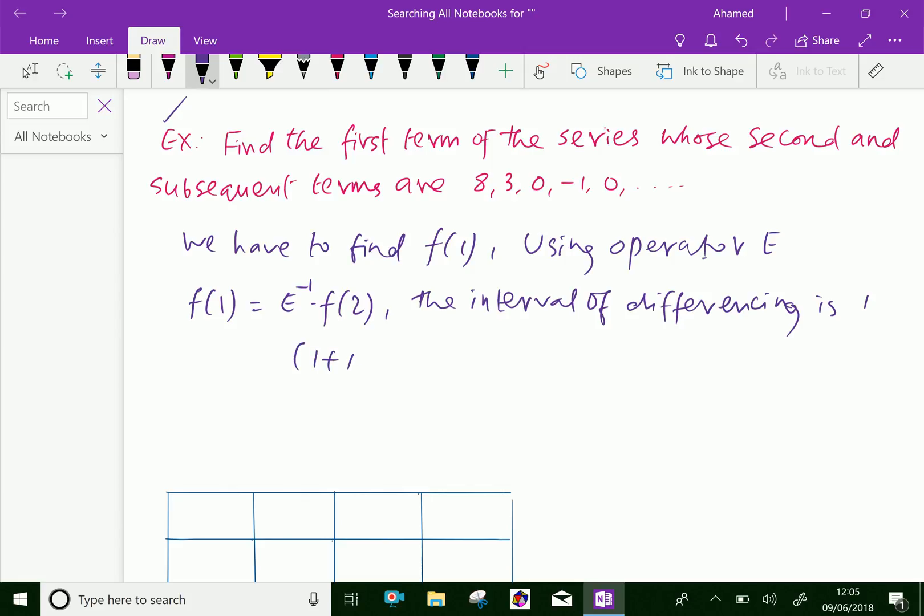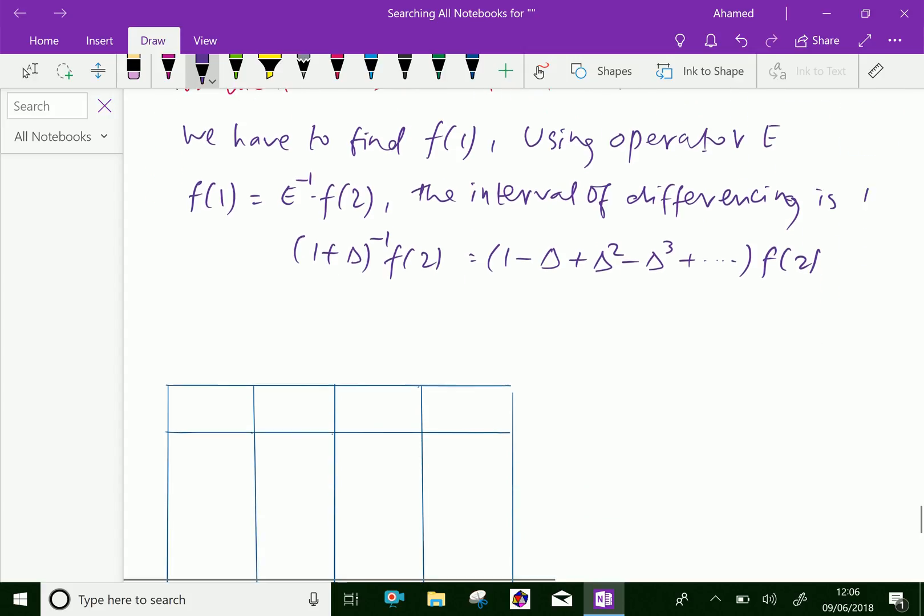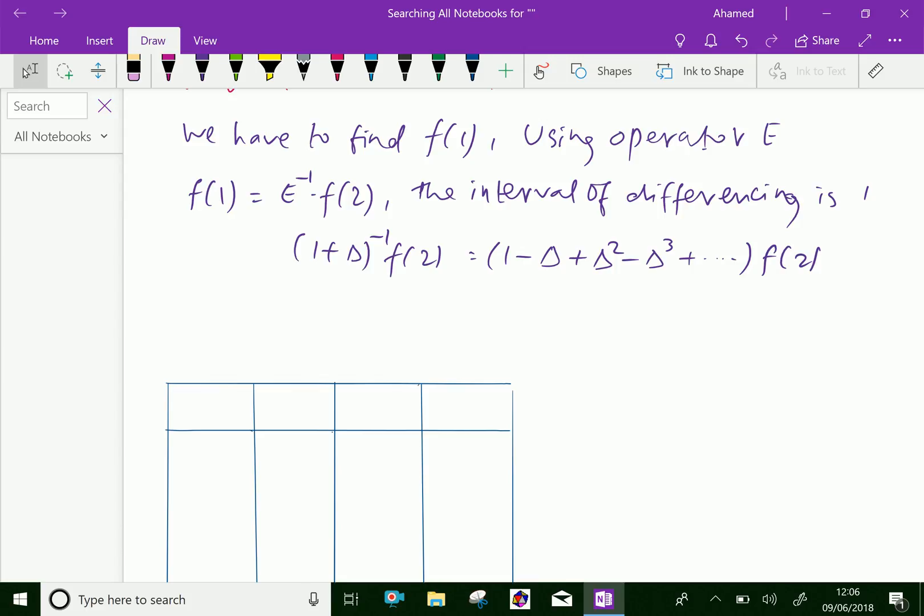By using the binomial theorem, we get 1 minus delta plus delta square minus delta cube, alternating, minus 1 minus delta times f(2). Since we are given 5 observations, therefore fourth difference will be constant and fifth difference will be 0.